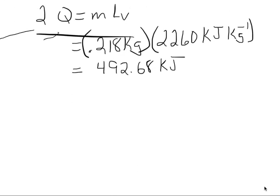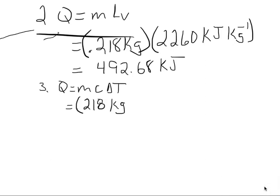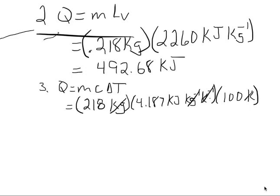The third step is to cool off that liquid. It's back to q = mcΔT. Mass is again 0.218 kilograms. The specific heat of liquid water is 4.187 kilojoules per kilogram·kelvin. Our change in temperature is from 100°C down to 0°C — so that's 100 kelvin. Kelvins and kilograms cancel out, and we're left with kilojoules. When we do the math, we get 91.28 kilojoules for that portion of the problem.